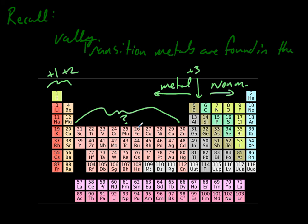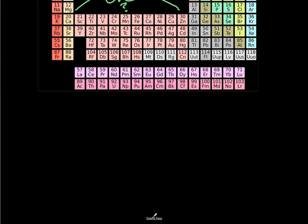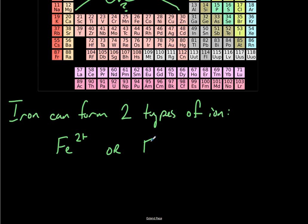The problem is you can't really tell what types of ions these are going to form just by looking at the periodic table like you can with the other groups. So what we're going to look at today is how some of these form ions, and the first example we'll talk about is iron. Iron, it turns out, can form two types of ion. It can either form Fe2+, or Fe3+.